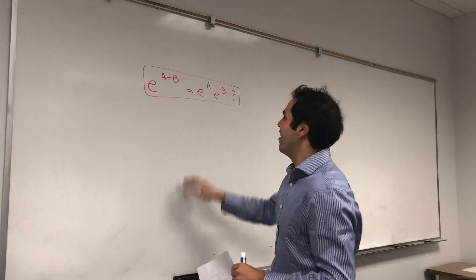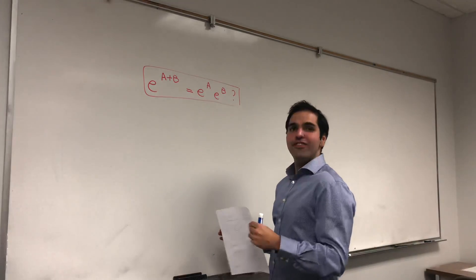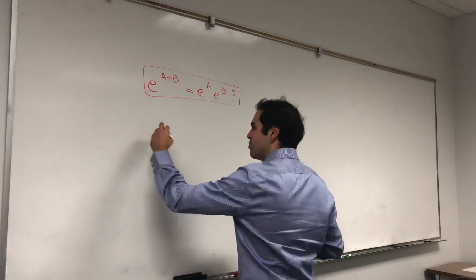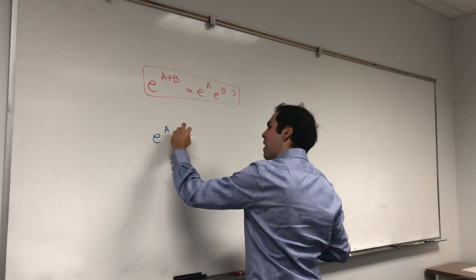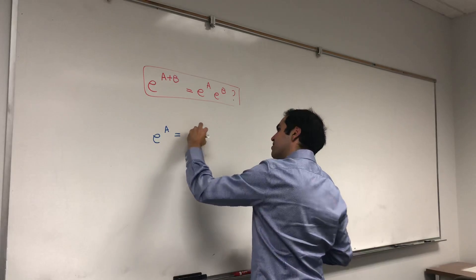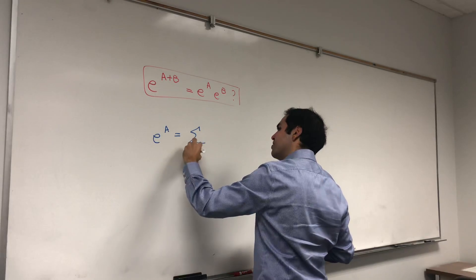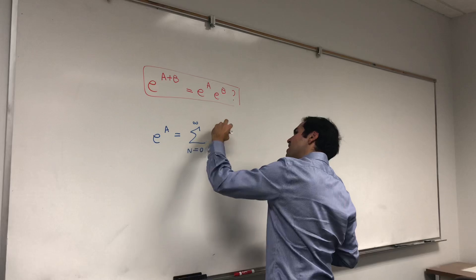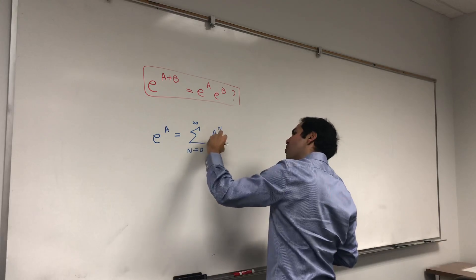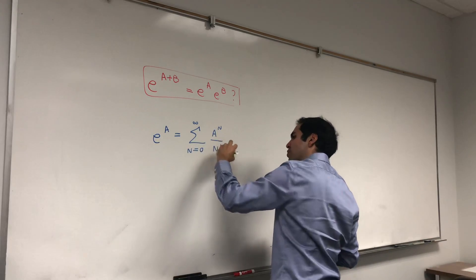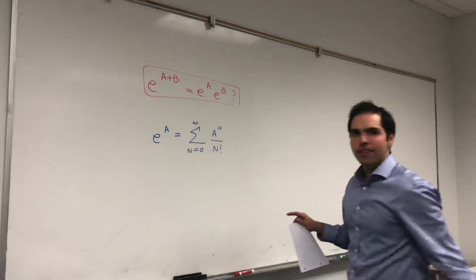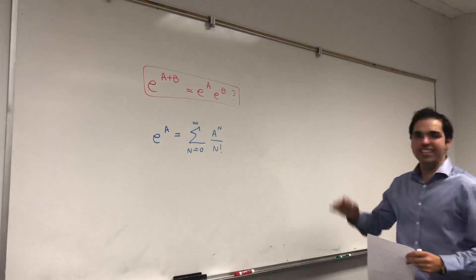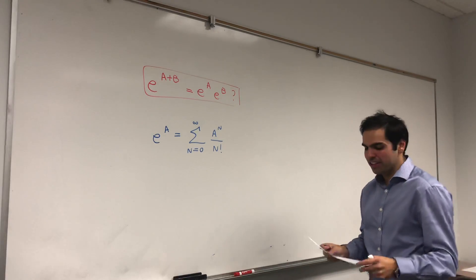First of all, how do you define the exponential of a matrix? Well, you just use power series. It's just a sum from 0 to infinity of A to the n over n factorial. I have done a separate video on this in case you're curious.